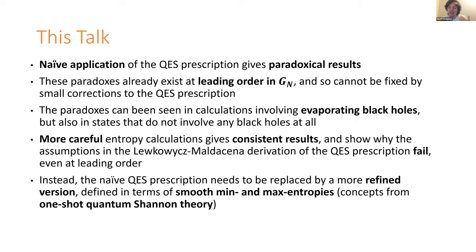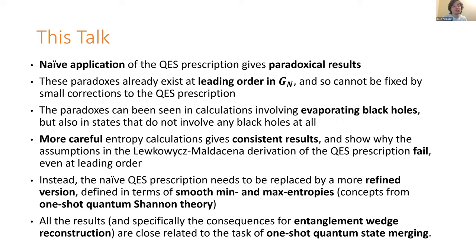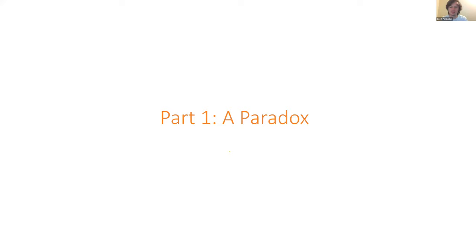These smooth entropies are like the von Neumann entropy but not necessarily equal to it. There are some reasonably close connections between the ideas in this talk and ideas in one-shot quantum Shannon theory. The results of the quantum extremal surface prescription, and more specifically their consequences for entanglement wedge reconstruction, are going to be very closely related to something in one-shot quantum Shannon theory called one-shot quantum state merging.